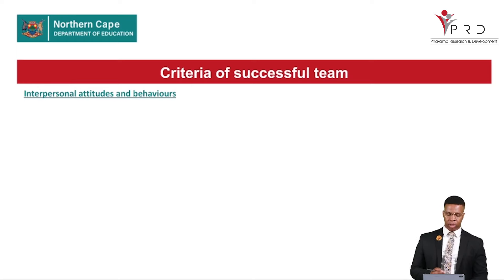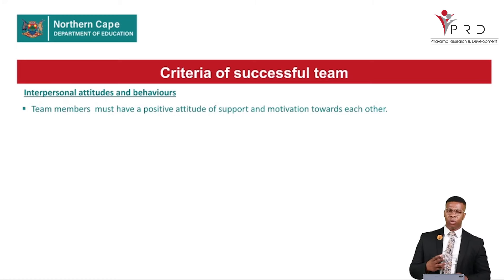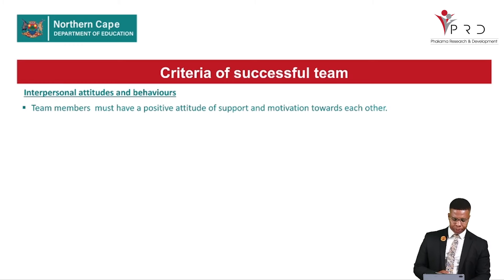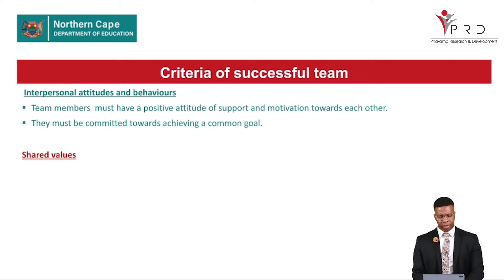The first criterion is interpersonal attitudes and behavior, which concerns how team members interact with one another. Team members must have a positive attitude of support and motivation towards each other. They should stay positive — if a mistake is made by one member, others should motivate and support them. Furthermore, members must be committed towards achieving a common goal, which demonstrates interpersonal attitudes and behavior within the team.